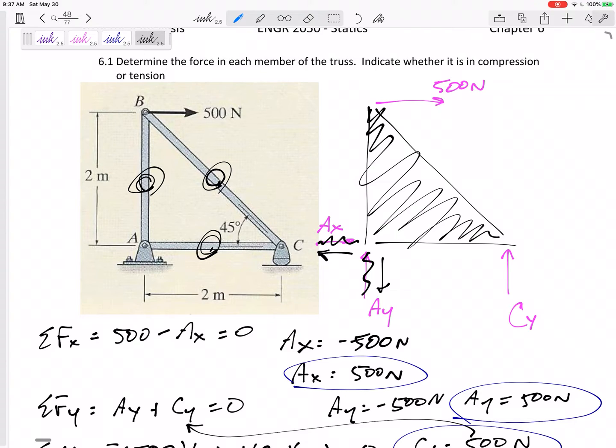You've got to open it up and look at a joint. So try to look at a joint that has only two unknowns. In this case, I think you could start with A, you could start with C, you could actually start with B. Any of those would only have two unknowns. I'm going to start at A. So here's what we do.